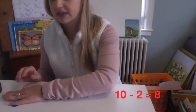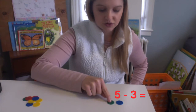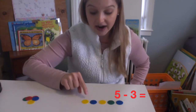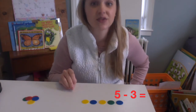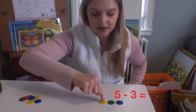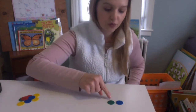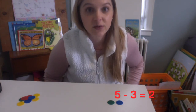Let's do one more together. Now let's do the math problem 5 minus 3. First we need to count out 5: 1, 2, 3, 4, 5. 5 minus 3 — so I'm going to take 3 away: 1, 2, 3. Now I'm going to count what's left over: 1, 2. So 5 minus 3 equals 2.